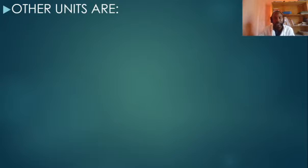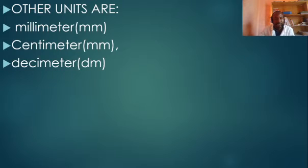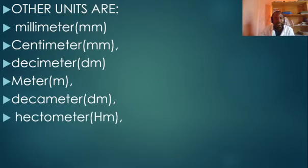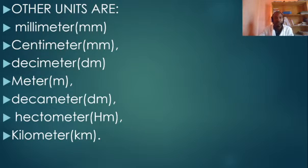There are other units for the measurement of length or distance. We have millimeters, centimeters, decimeters, meters, decameters, hectometers, and kilometers. These are all different units we use in the measurement of length or distance. At the end of this lesson, you will know how to convert from one of these units to the other. I will show you the method — it is very simple.